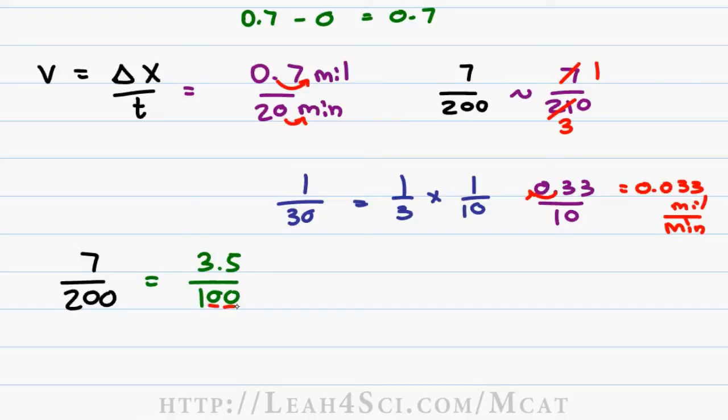3.5 over 100 is much easier to work with. We're dividing by a factor of 10 with 2 zeros. We move the decimal back 2 spaces and that gives us 0.035, which is very close to 0.033. Use whichever trick feels more natural to you, but whatever you do, do not resort to long division. It's going to take too much time.